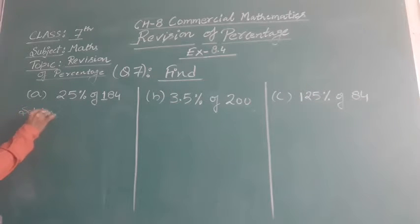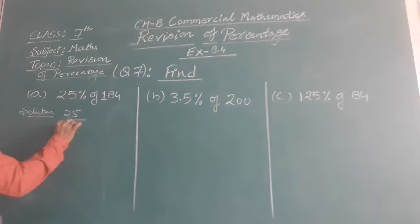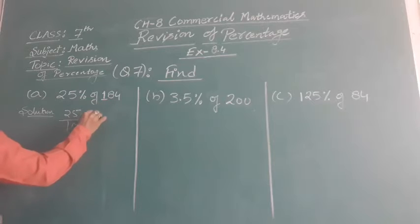So we have 25%, that is 25 upon 100 of 184.